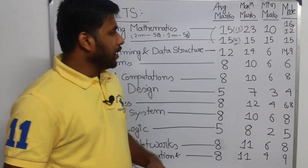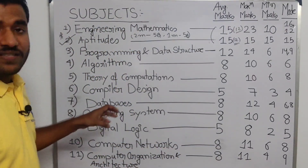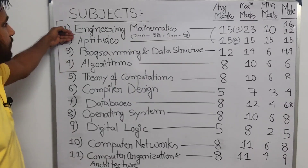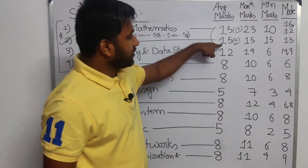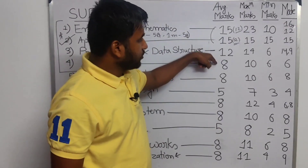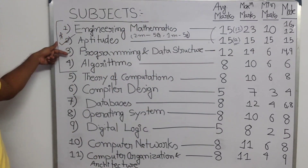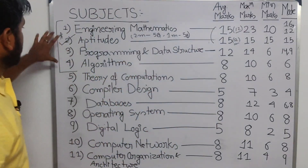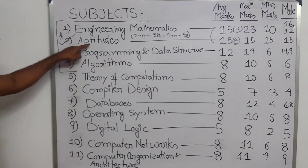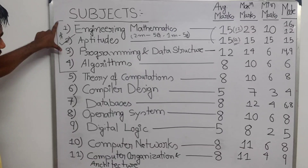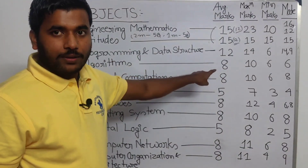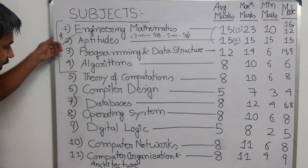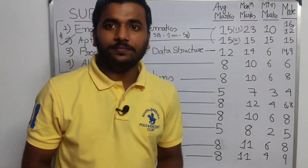This is the detail analysis based on the last 10 years. You should study in this order. If you look at just four subjects — Engineering Mathematics (15), Aptitude (15), Programming and Data Structures (12), and Algorithms (8) — that adds up to 50 marks, which is 50% weightage. Out of 11 subjects, just these four give you half the marks. If you do these four subjects well, you will cover 50% of the GATE weightage. All the best for your GATE exam, thank you everyone.